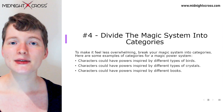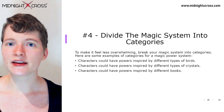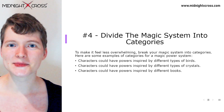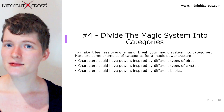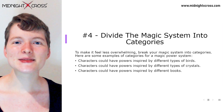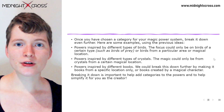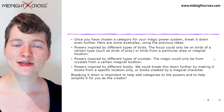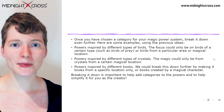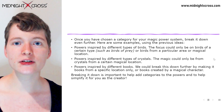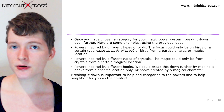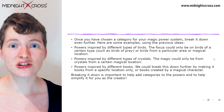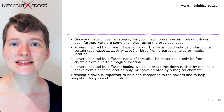Number four: divide the magic power system into categories. To make it feel less overwhelming, break your magic power system down into categories, which can also help you to better present it. Some examples include characters having powers inspired by different types of birds, abilities inspired by different types of crystals, or powers inspired by different types of books. Once you have categories, break them down further — for example, bird-inspired powers could focus only on birds of prey or birds from a particular magical location in your story. This helps make the power system easier to present.